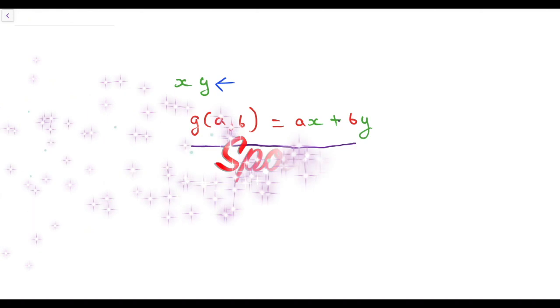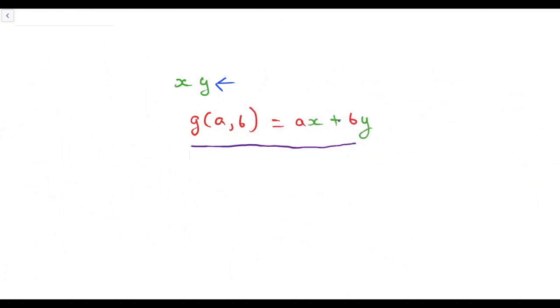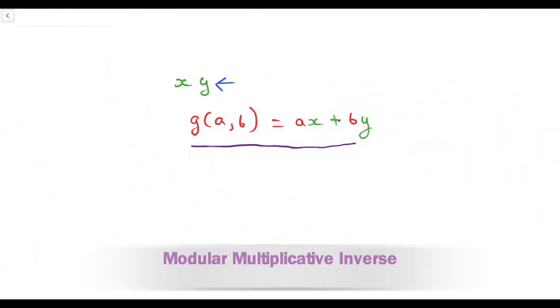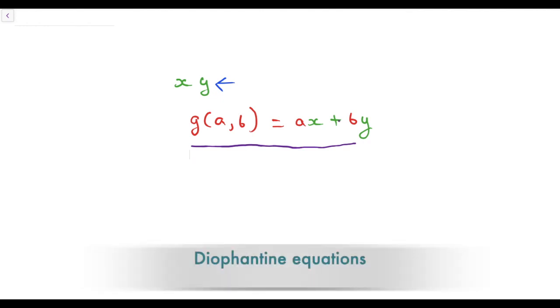Spoiler alert! This type of equation is used to find the modular multiplicative inverse and to solve Diophantine equations in two variables.